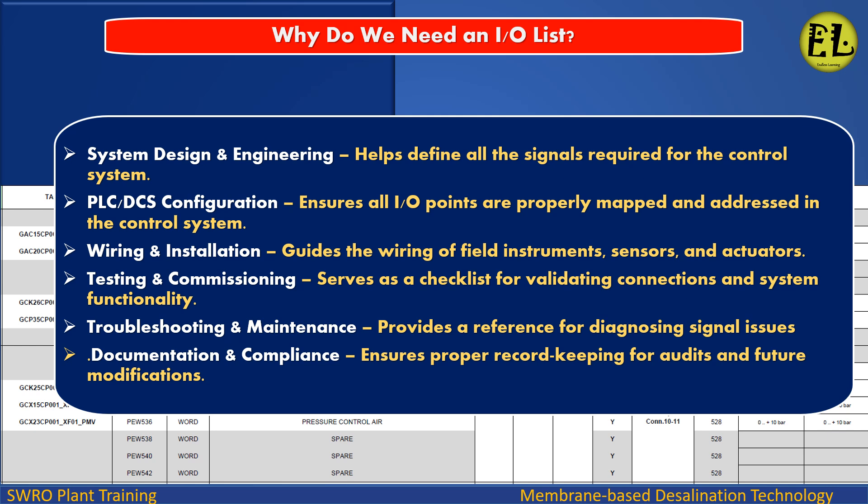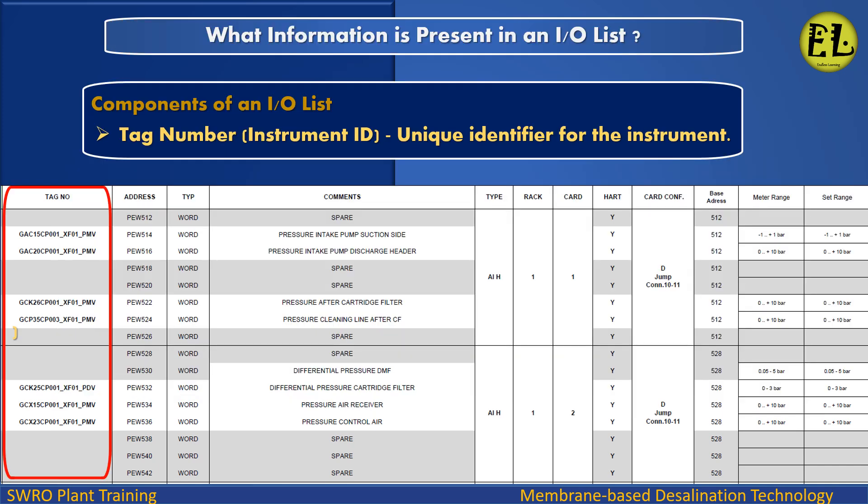Troubleshooting and Maintenance: it provides a reference for diagnosing signal issues. Documentation and Compliance: it ensures proper record keeping for audits and future modifications. What information is present in an IO List? Tag Number / Instrument ID: a unique identifier for the instrument.